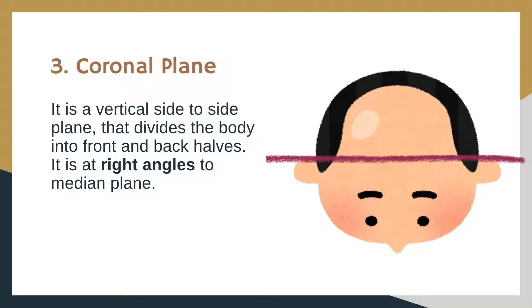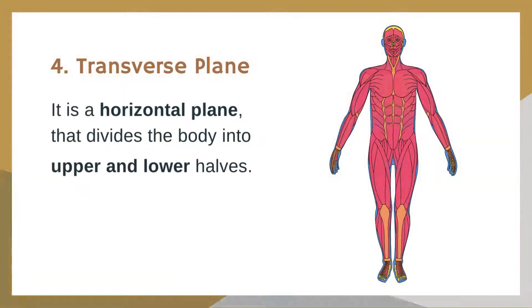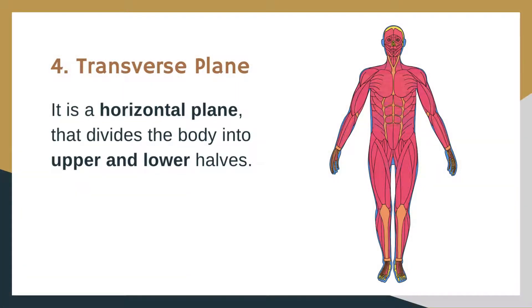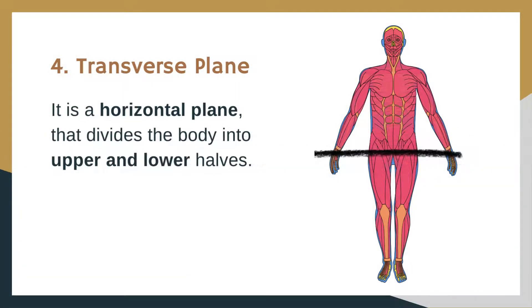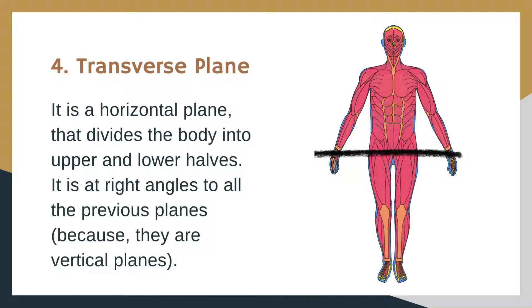The coronal plane is at right angles to the median plane and is also known as the frontal plane. Transverse plane: it is a horizontal plane that divides the body into upper and lower halves. It is at right angles to all the previous planes because they are vertical planes.